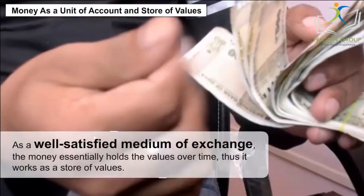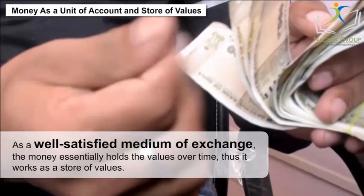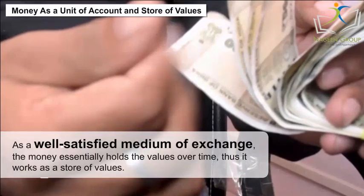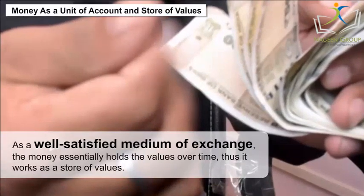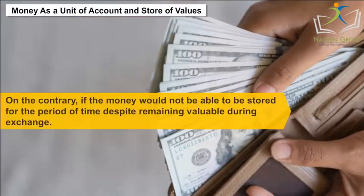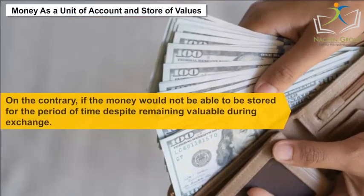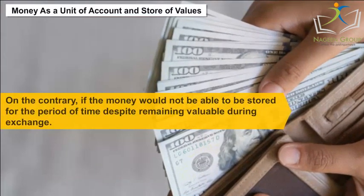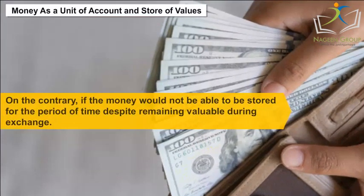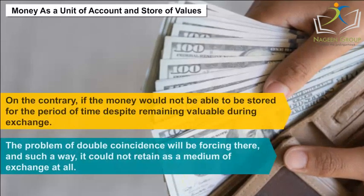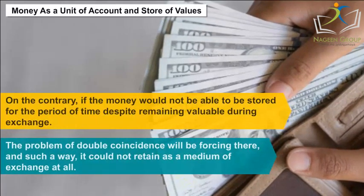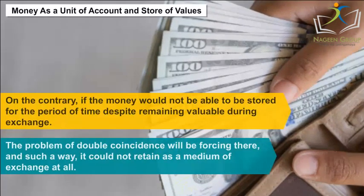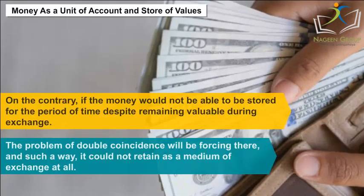As a well-satisfied medium of exchange, money essentially holds value over time, and thus it works as a store of value. On the contrary, if money would not be able to be stored for a period of time — despite remaining valuable during exchange — the problem of double coincidence would be forced upon us, and in such a way it could not retain its role as a medium of exchange at all.